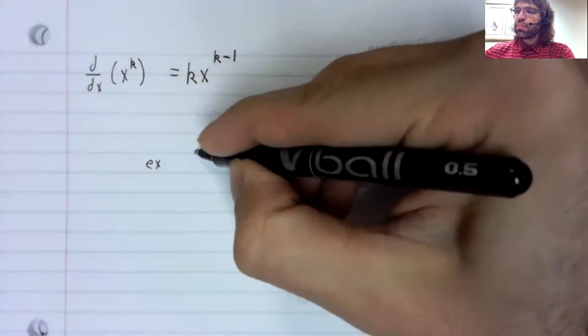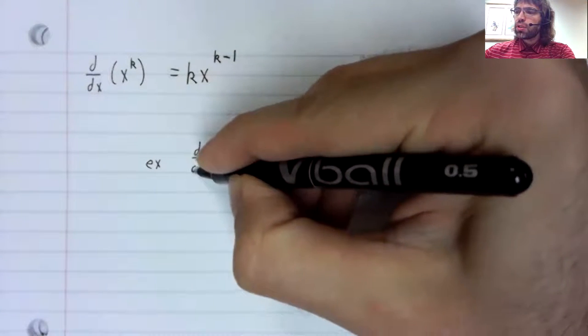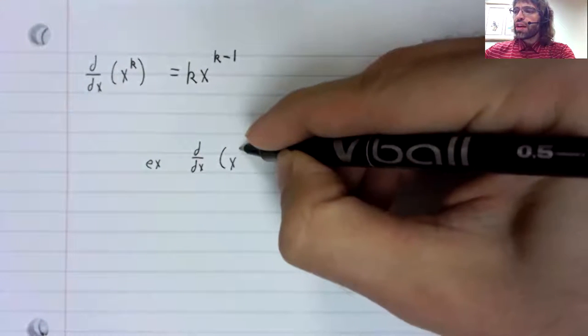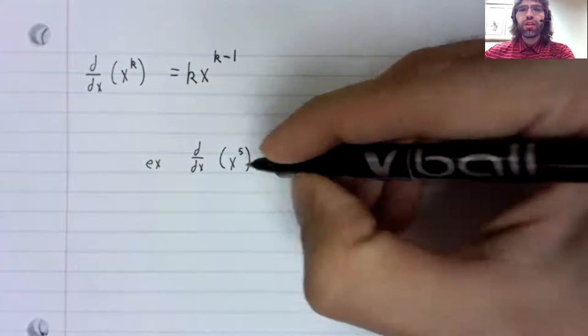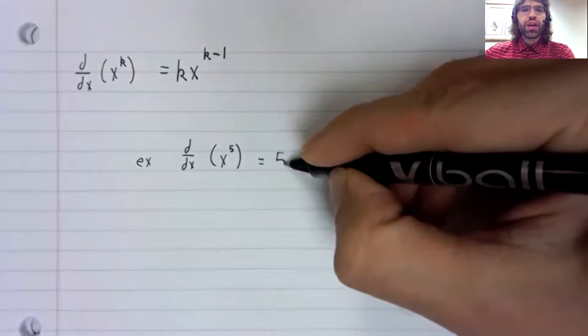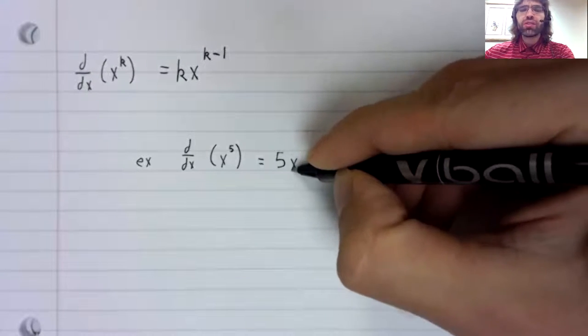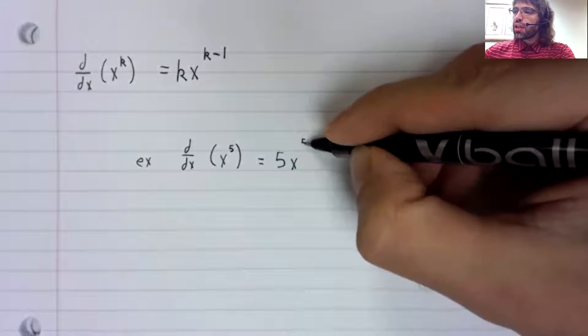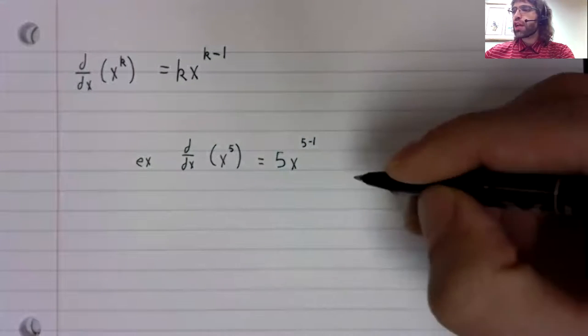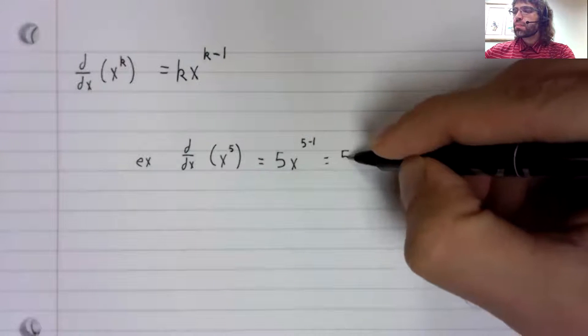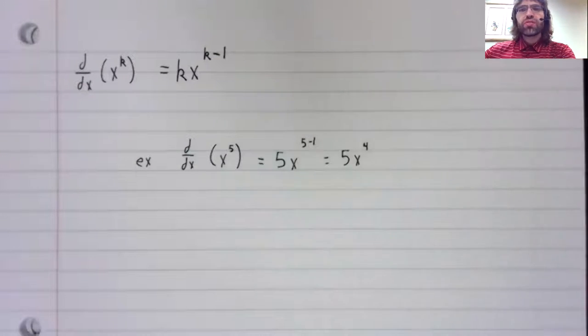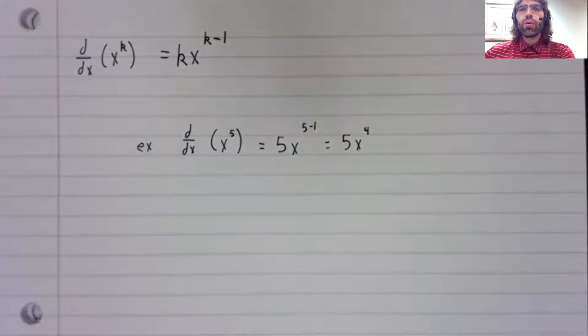For example, the derivative of x to the 5th. The 5 comes down in front of the x, and in the power, we subtract 1. It's 5x to the 4th.